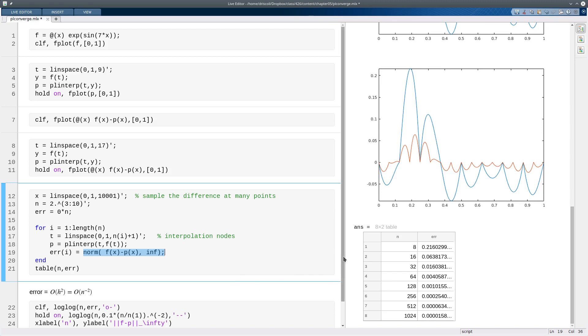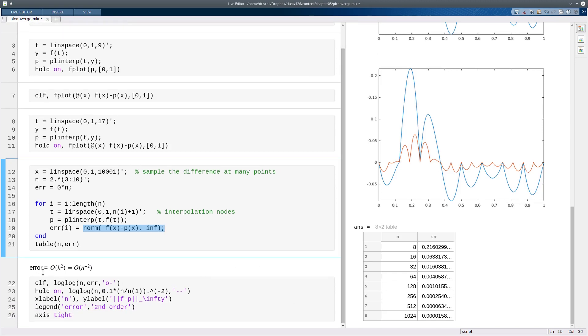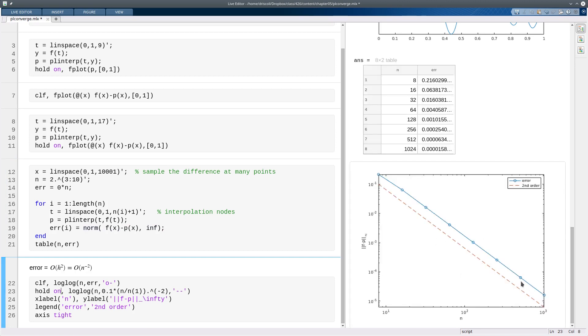Or if we want to see second-order convergence, since error is proportional to h squared, h is proportional to 1 over n. It's the spacing between the points. So the error is proportional to n to the minus 2. That means we want to show it on a log-log graph, and we should get a straight line at least as n goes to infinity. And in fact, we get something that's extremely straight even for smaller values of n.